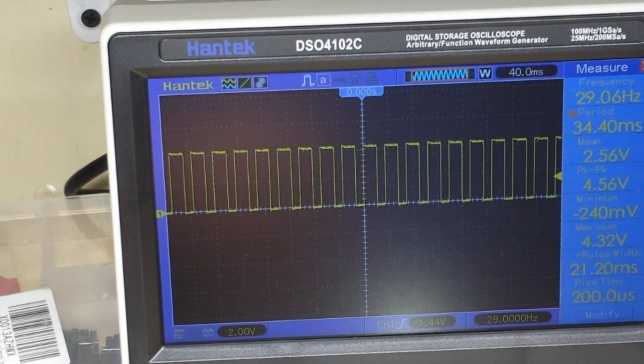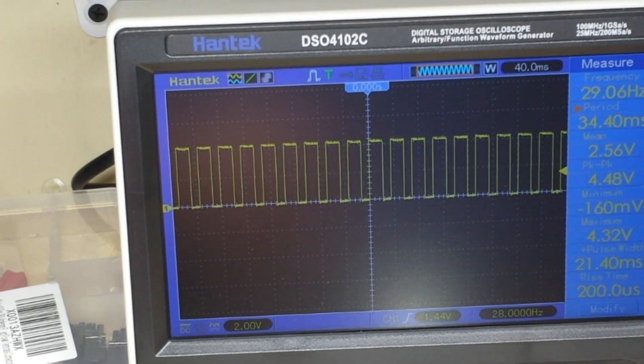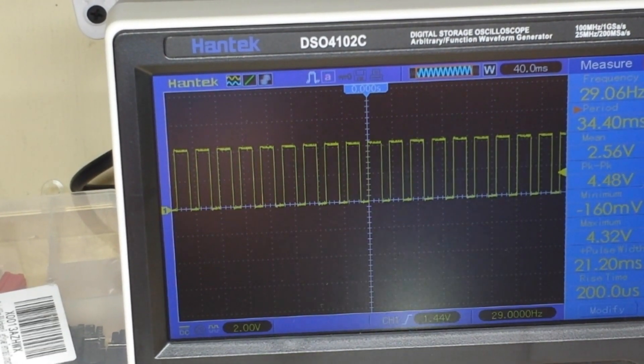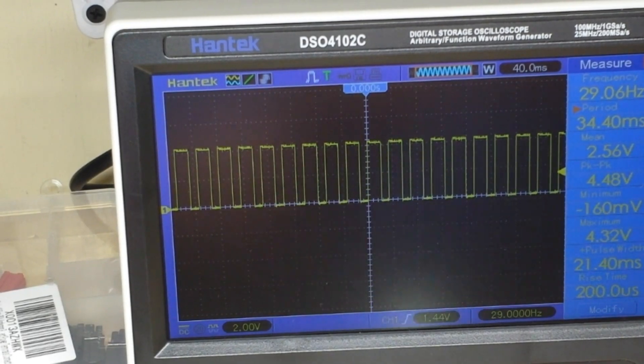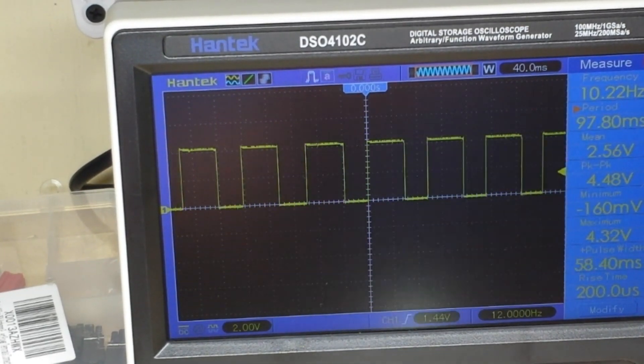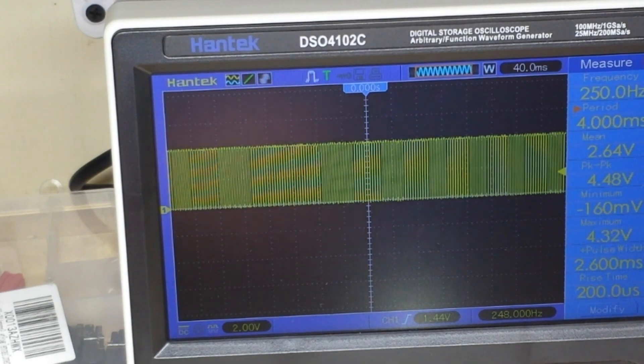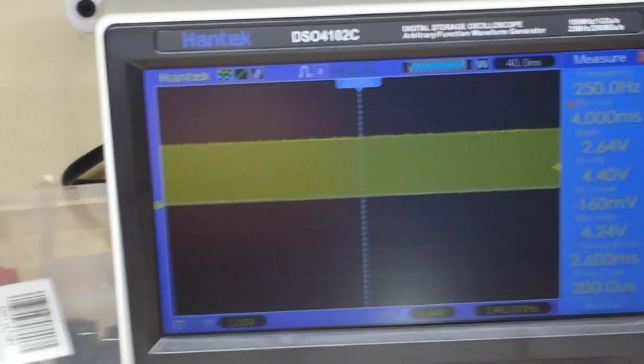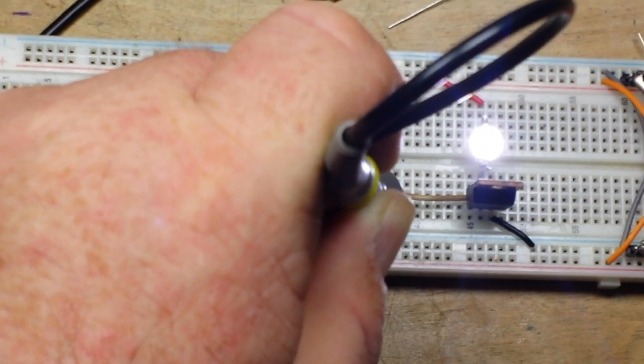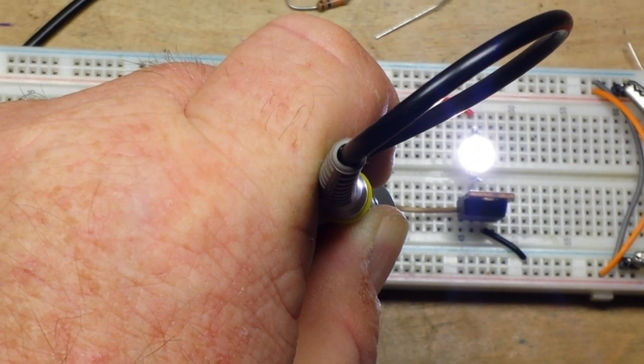There, there you can see 30 Hertz. This is the flash rate. Let's turn it up more. That's down. There we're up to 240. Now 240 Hertz. I can't see anything at all.